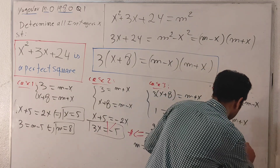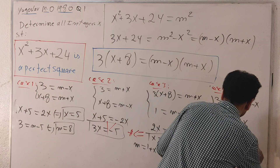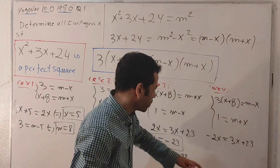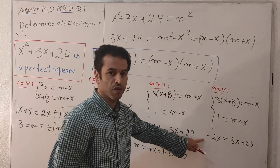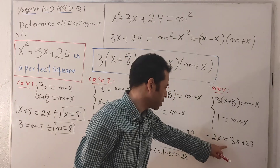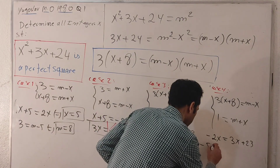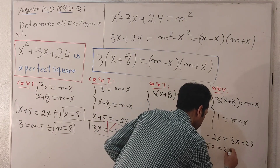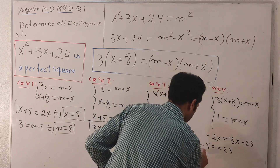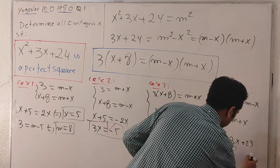Taking 3x to the left-hand side: minus 3x minus 2x equals minus 5x, so minus 5x = 23. This is also impossible because x must be an integer. Case four is ruled out.